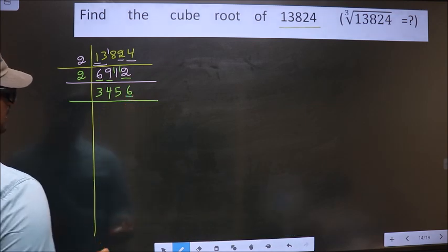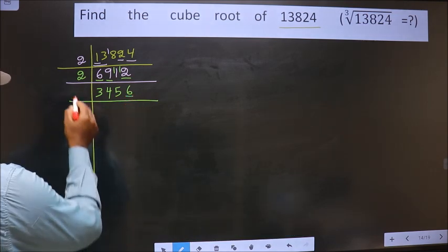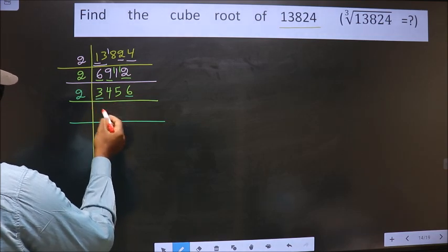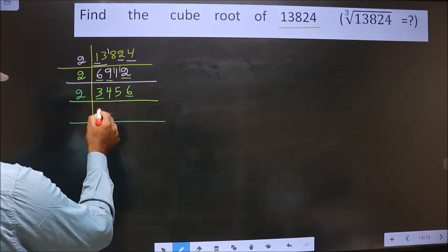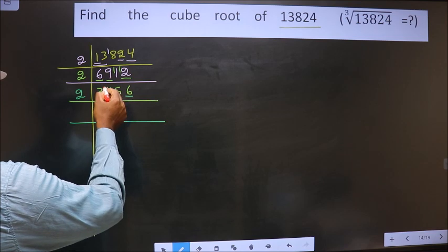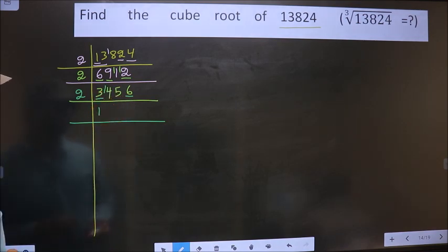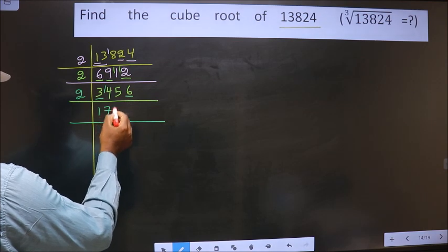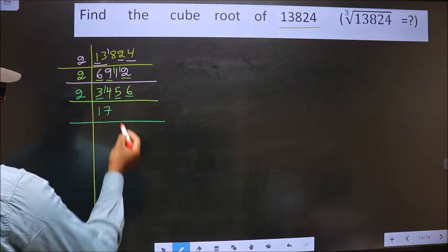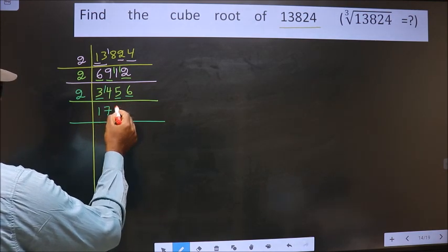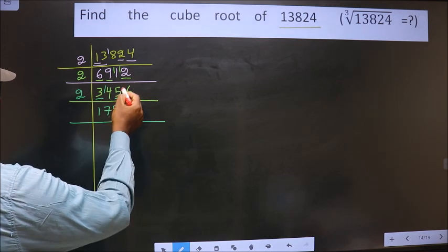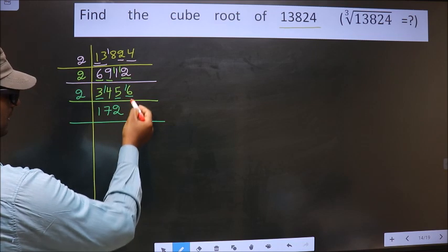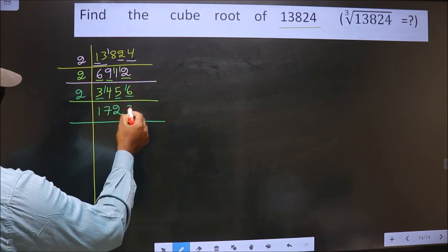For this number, the last digit is 6, which is even, so we take 2. First digit is 3; close to 3 in the 2 table is 2×1=2. 3 minus 2 is 1, carried forward making it 14 — 2 sevens are 14. Next digit is 5; close to 5 is 2×2=4. 5 minus 4 is 1, carried forward making 16 — 2 eights are 16. So 3456 ÷ 2 = 1728.